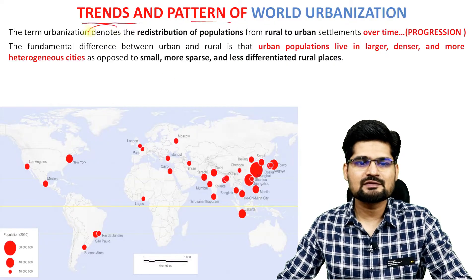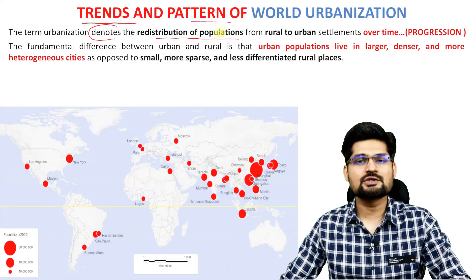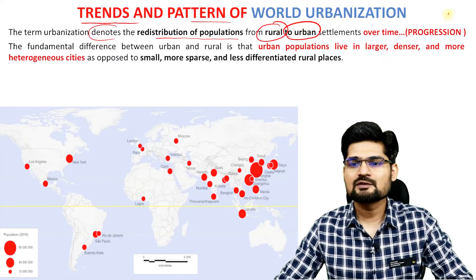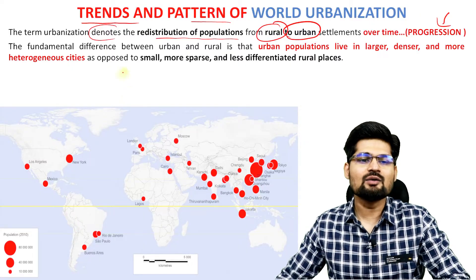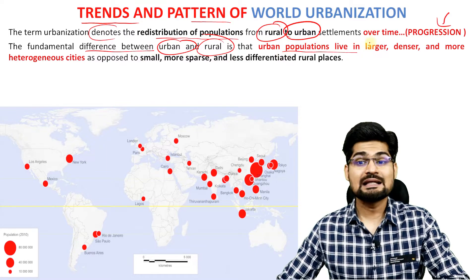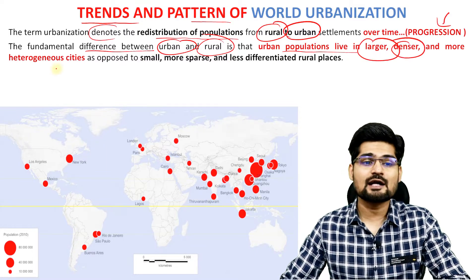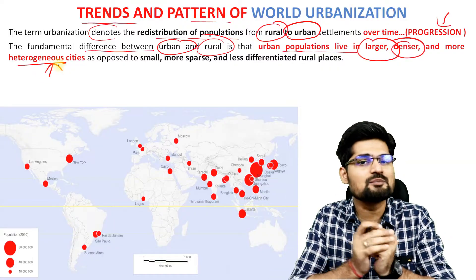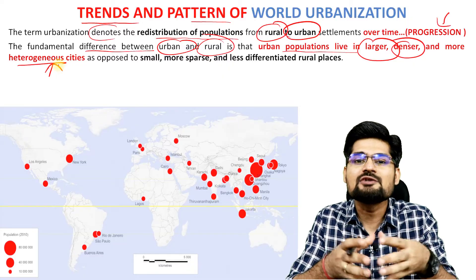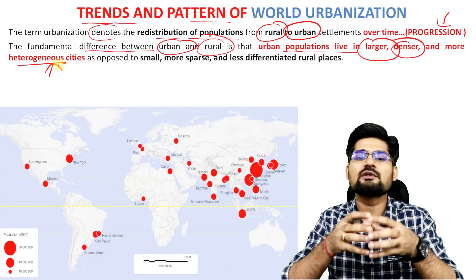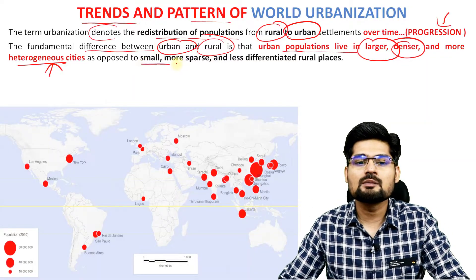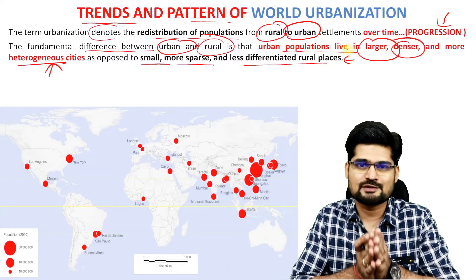The term urbanization denotes the redistribution of populations from rural to urban — this is the urban progression of human beings. The fundamental difference between urban and rural is that urban populations live in large, denser and more heterogeneous cities. These are the three important characteristics of urban places: they are large, they are denser, and they are heterogeneous — meaning different people from different backgrounds come together to live in urban areas, as opposed to small, more sparse and less differentiated rural areas.